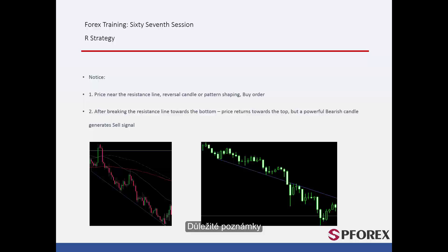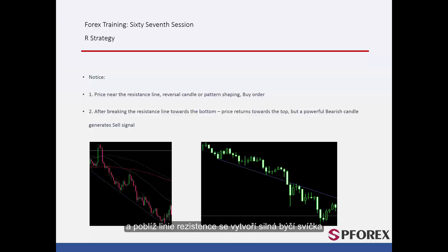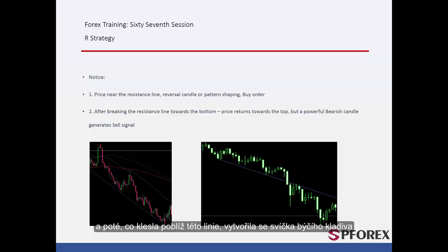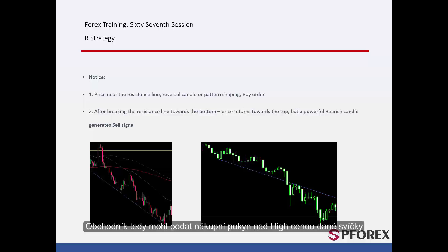Significant notifications: When price declines towards the resistance line without crossing anything, if a powerful bullish candle forms near the resistance line, then a powerful and reliable buy signal is generated after price goes higher than that bullish candle. On the left graph, price could not cross the resistance line for a long time. After it fell near this line, a bullish hammer candle formed. Thus, a trader could place a buy order above the high price of the given candle.